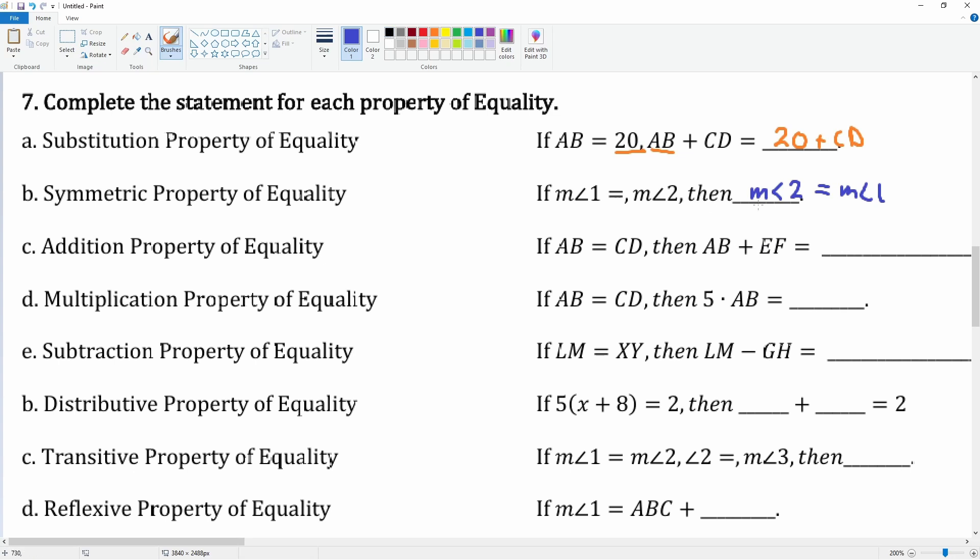Next, the multiplication property. The 5 is being multiplied to AB, therefore the 5 also has to be multiplied to the CD part.